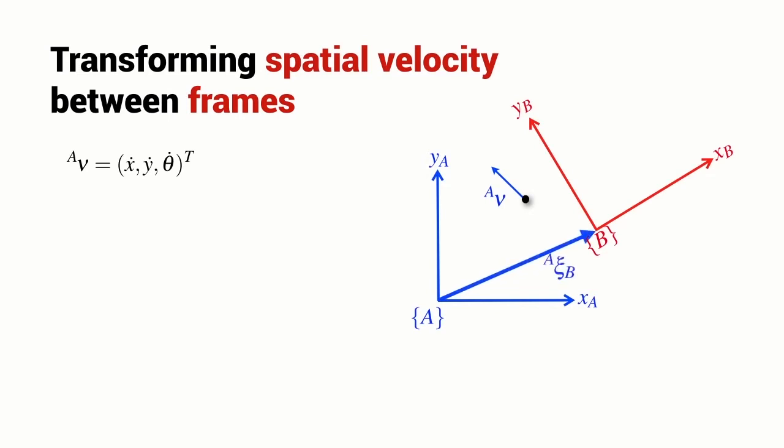Now, I'm going to introduce another coordinate frame, a red coordinate frame denoted B, and we have a relative pose that describes the pose of frame B with respect to the pose of frame A. Now, I could also describe the velocity of the point with respect to coordinate frame B, and I do that by using a leading superscript B instead of A.